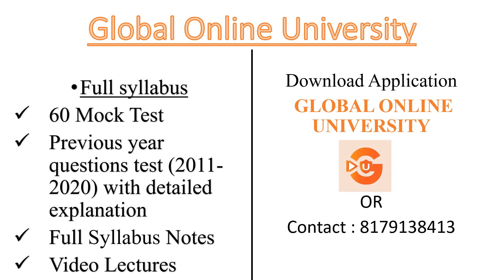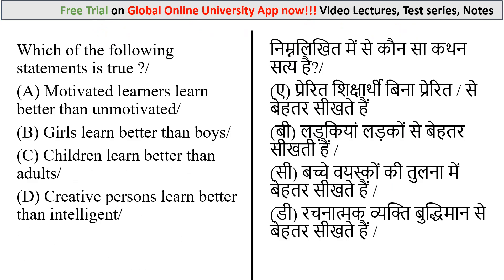Now let's begin with today's lecture. The first question: which of the following statements is true? The options given are: (a) motivated learners learn better than unmotivated, (b) girls learn better than boys, (c) children learn better than adults, and (d) creative persons learn better than intelligent persons.